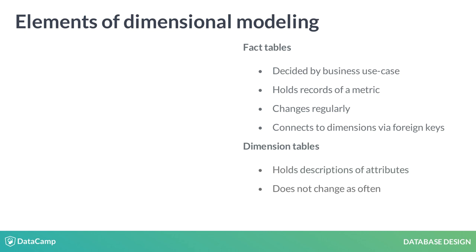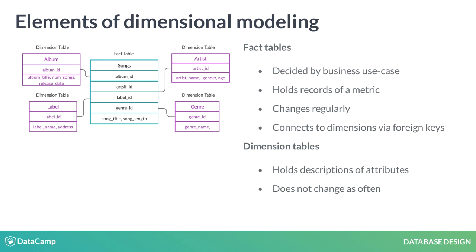Dimension tables hold descriptions of specific attributes and these do not change as often. Let's bring back our example where we're analyzing songs. The turquoise table is a fact table called songs. It contains foreign keys to purple dimension tables. These dimension tables expand on the attributes of a fact table, such as the album it's in and the artist who made it. The records in fact tables often change as new songs get inserted. Albums, labels, artists, and genres will be shared by more than one song, so records in dimension tables won't change as much.